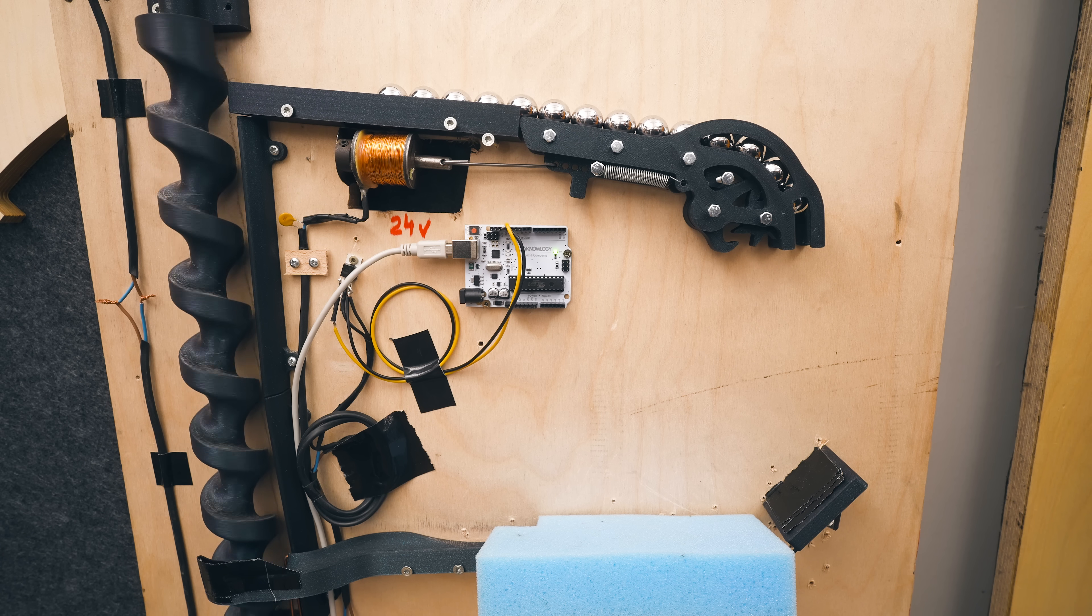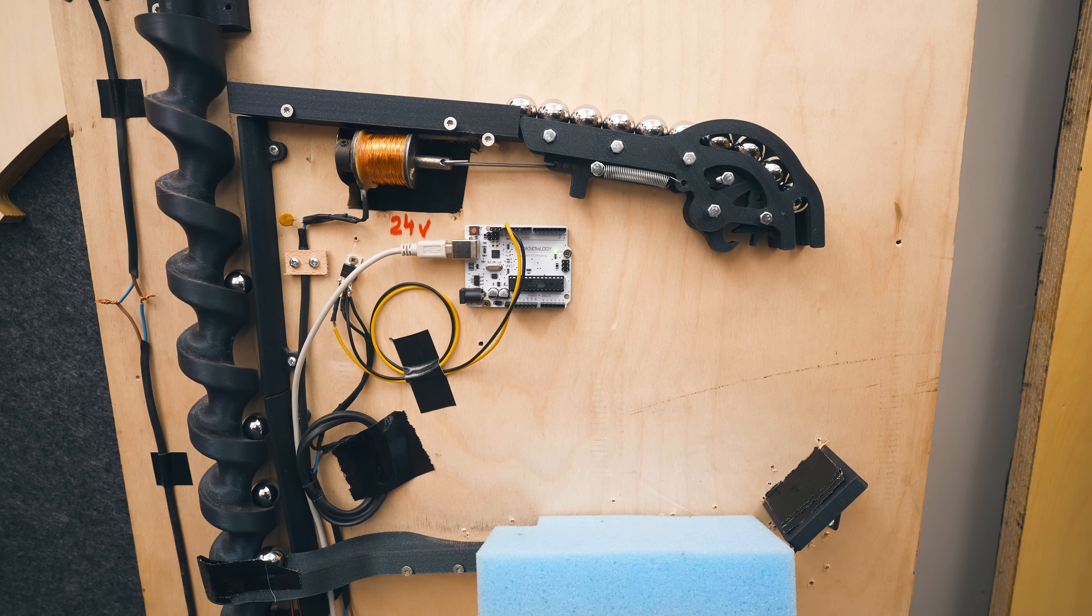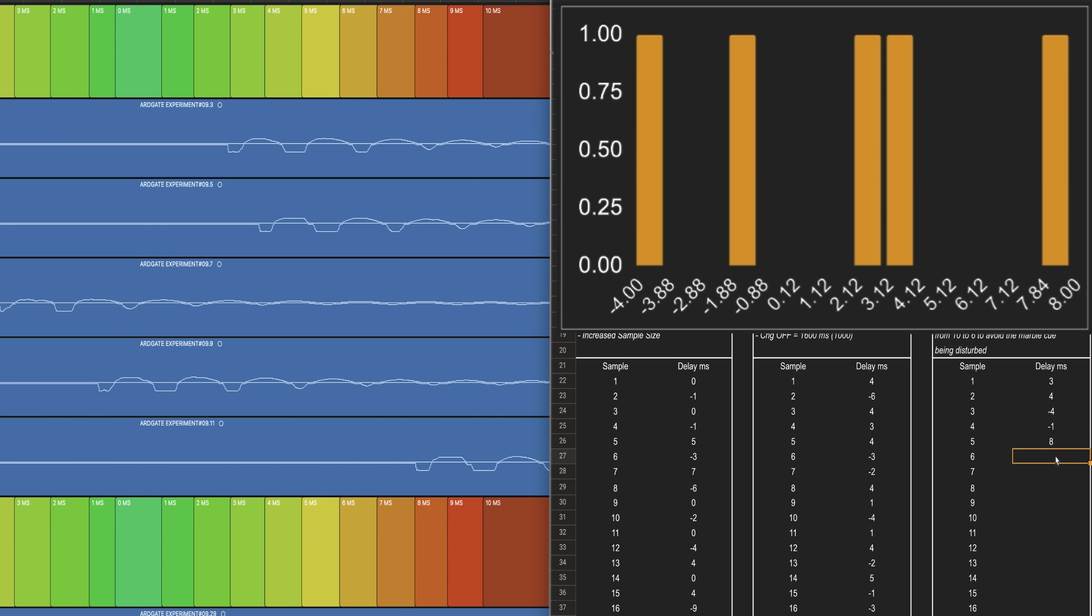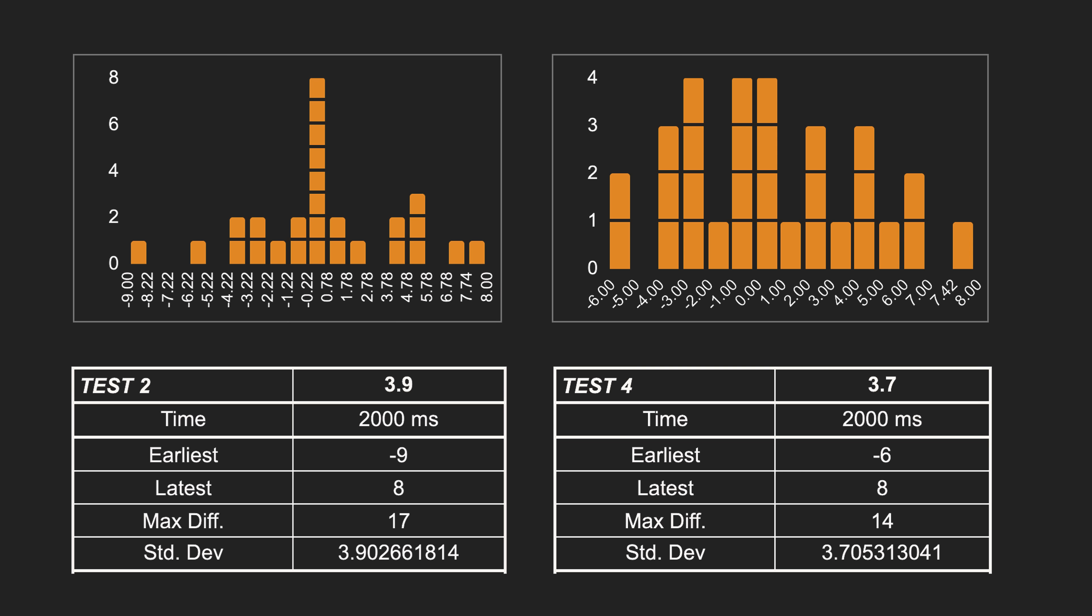When all the marbles have been lifted up, the program restarts and drops six more marbles. And I recorded thirty samples and analyzed them in the spreadsheet, so every blue dot in the histogram is a marble drop. And we reached a score of 3.7 millisecond compared to 3.9 before, so hardly any difference.